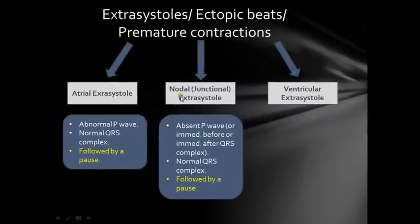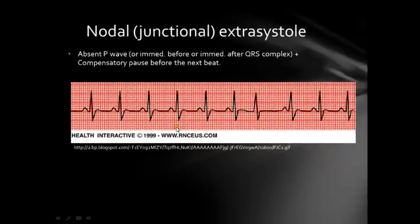The second type is called nodal or junctional extrasystole, and it's exactly the same as atrial extrasystole. The only difference is that the P wave is absent — it could be immediately before or immediately after the QRS complex, but it's usually absent. The QRS is normal and it's followed by a pause. Looking at this example, the rhythm is irregular at one point. The P wave is absent, the QRS is normal — less than three small squares — followed by a pause. This is nodal or junctional extrasystole, originating from the AV node.